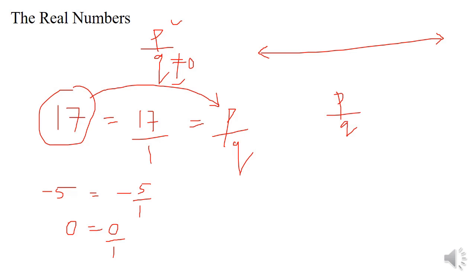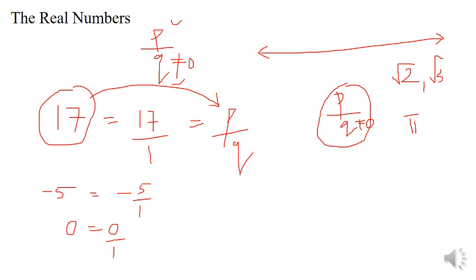Such numbers are called irrational numbers. Irrational numbers are numbers which cannot be expressed in the form P by Q, where P and Q are integers and Q is not equal to 0. Examples of irrational numbers are root 2, root 3, pi, and so on. The numbers on the number line can be categorized into two: rational numbers and irrational numbers. Together they constitute a new system called the real numbers. Real numbers are numbers which can be represented on a number line — that is, numbers which have a position on the number line. As a result, the number line is also known as the real number line.